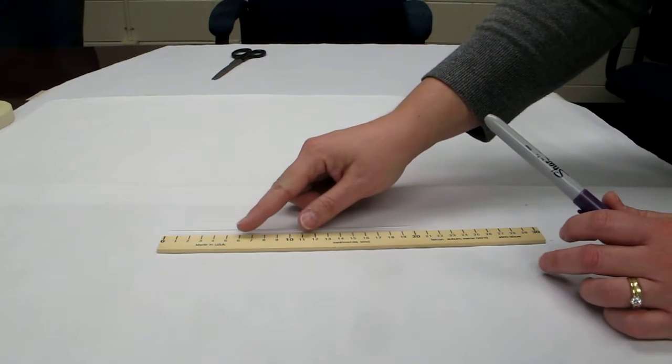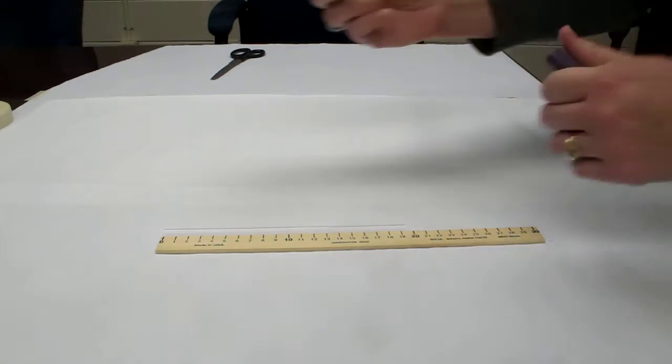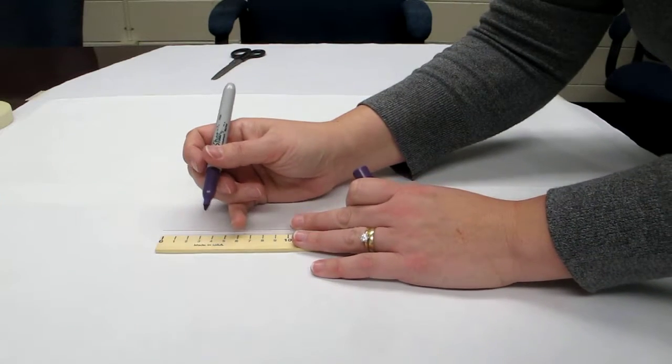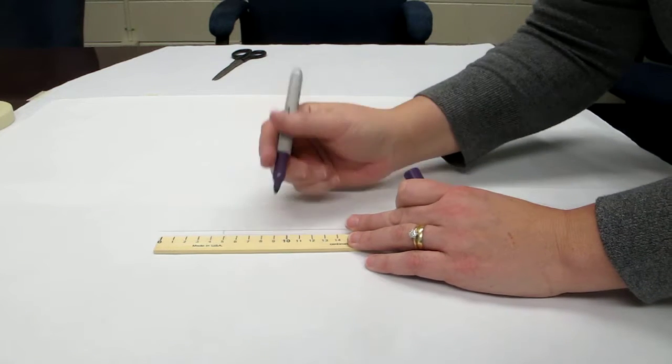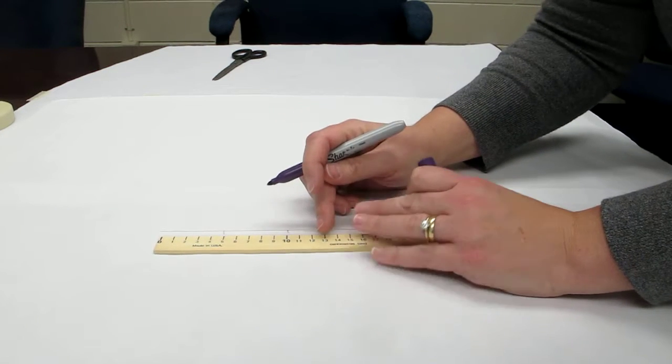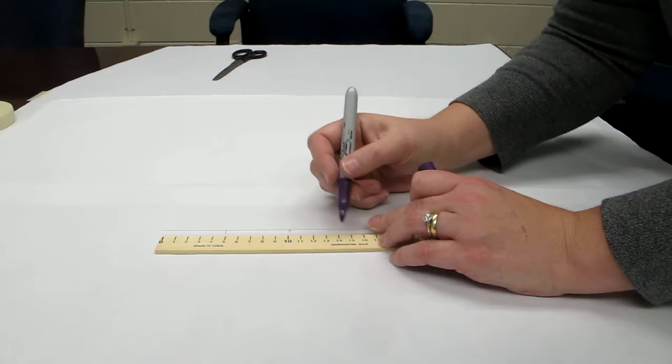First, a student will need to lay the straw next to the ruler and make a mark at 5 centimeters, 10 centimeters, and 15 centimeters.